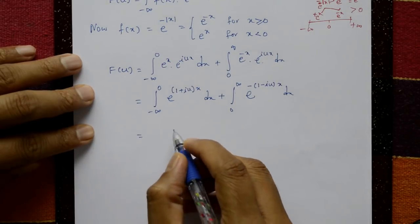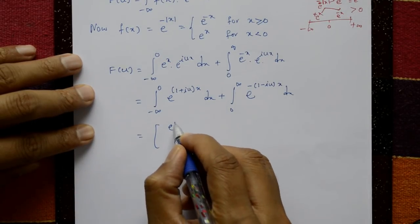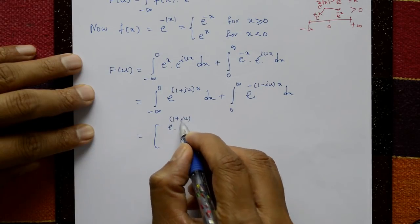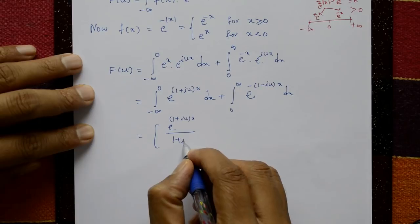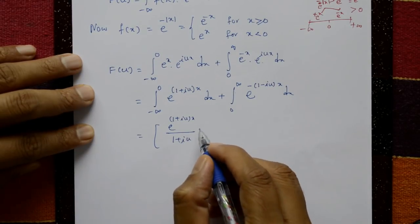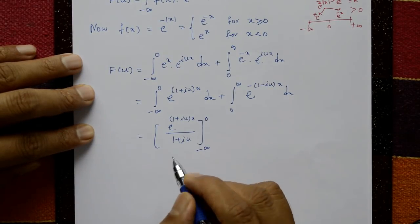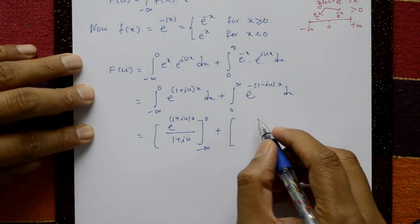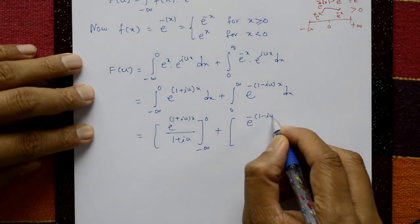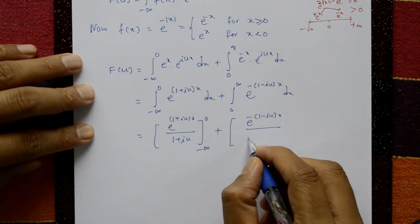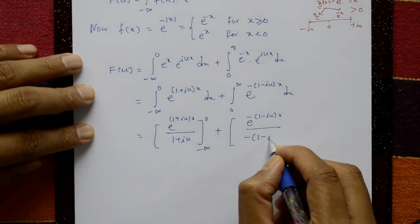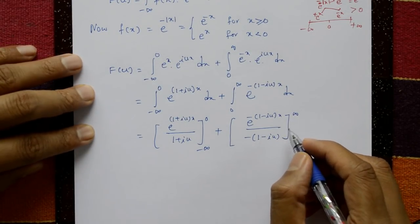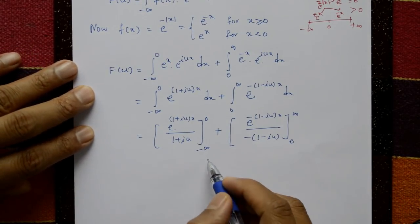Now integrate: the first term gives e raised to (1 + i·u)x divided by the constant (1 + i·u), with limits minus infinity to zero. The second term gives e raised to minus(1 - i·u)x divided by the constant minus(1 - i·u), with limits zero to infinity.